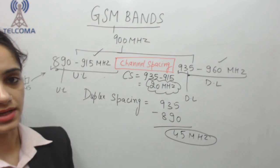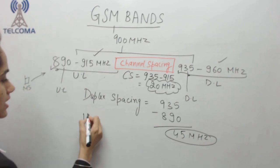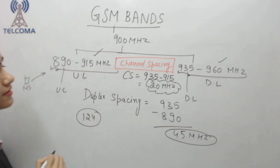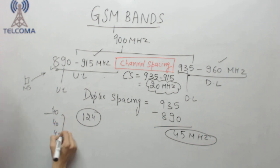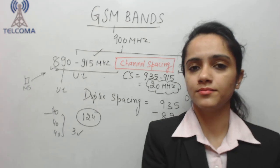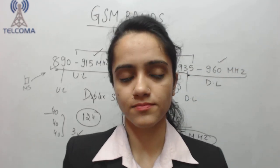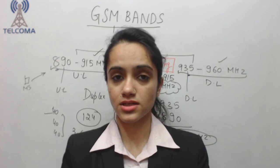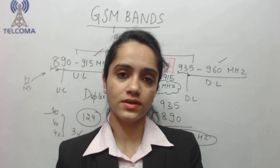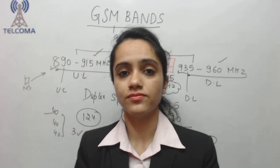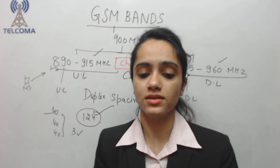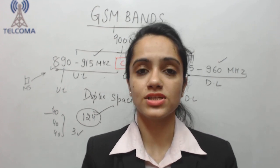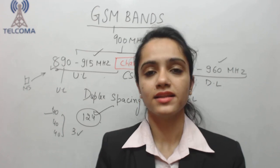Since we have only 124 ARFCNs in this band, if each company purchases around 40 ARFCNs, approximately 3 companies can operate in this band and the rest must move to another band. When purchasing spectrum, it is done on a first-come-first-served or bidding basis depending on the country. Each operator purchases ARFCN numbers and operates on those. This concludes the GSM 900 megahertz band discussion.